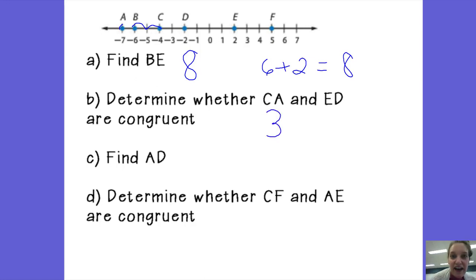And again, even though we went to the left, it's still positive because length and distance are always positive. Then the length of ED, again, it's going from the right to the left. 1, 2, 3, 4. ED is 4. Since 3 is not equal to 4, notice that equal sign with the slash, they're not equal. So CA is not congruent to ED.